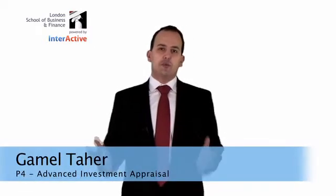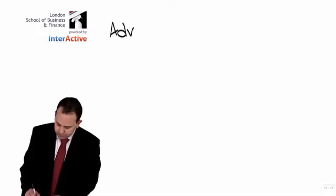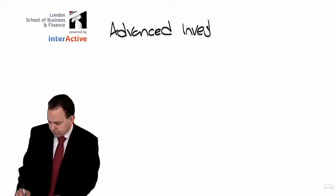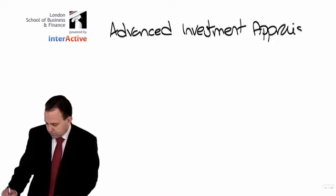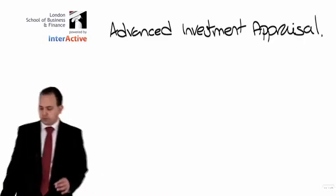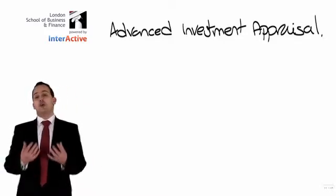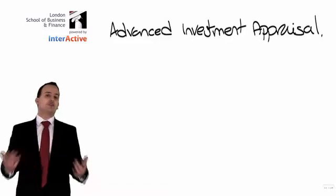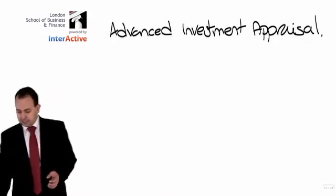Now we're going to look at Section B, which is Advanced Investment Appraisal. As you would have studied previously on paper F9, companies are going to need to decide how they're going to take their money and invest it in projects to get back some sort of return. And there are several things that fundamentally we'll need to consider.